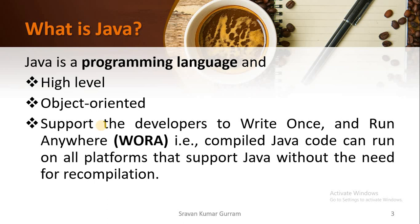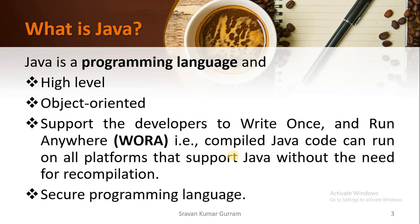One of the best features of Java is WORA — Write Once and Run Anywhere. The meaning of this is: the compiled Java code can run on all platforms that support Java without the need for recompilation. For example, if you develop code in Windows, the compiled code can be run on all platforms without recompilation.